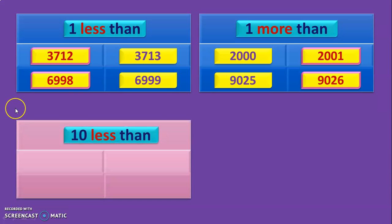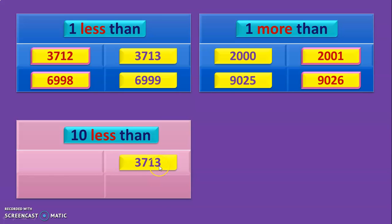Let us move on to the next topic — 10 less than. The keyword 'less' means subtraction, and this time it is 10 less than. So we will have to look at the 10s place. The number given here is 3,713. We will have to look at the 10s place — the 1s place will have no change. In the 10s place we have a 1, so we subtract 1 from it. The answer is 3,703.